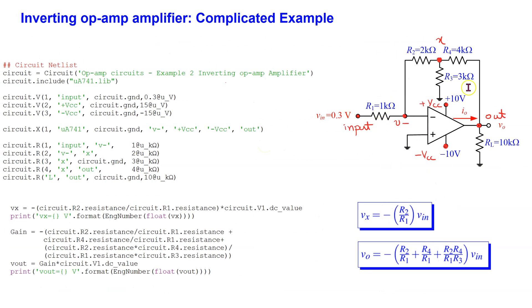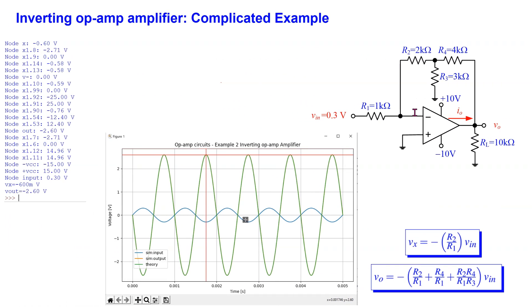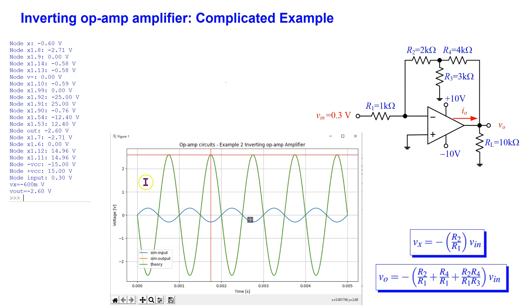Finally, consider an inverting op-amp amplifier with a Y or a T structure of resistors in the feedback path. We can construct the circuit netlist and program the gain formulas as shown here. Please pause the video now if you wish to study this in more detail. We can simulate this circuit to obtain either the DC bias values or the transient simulation plots. For instance, in this case, we can see that the output is 180 degree out of phase with the input due to the inverting amplifier.